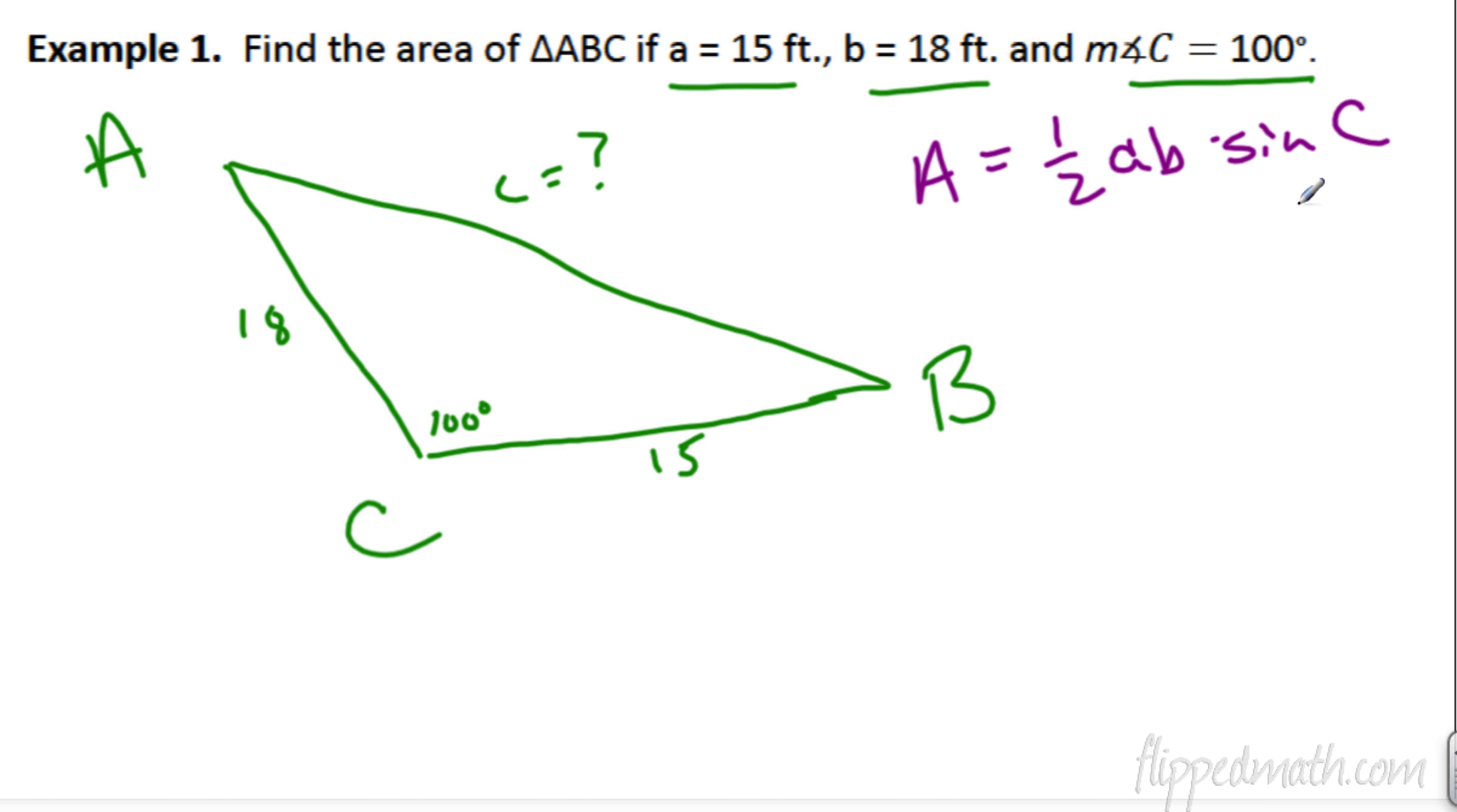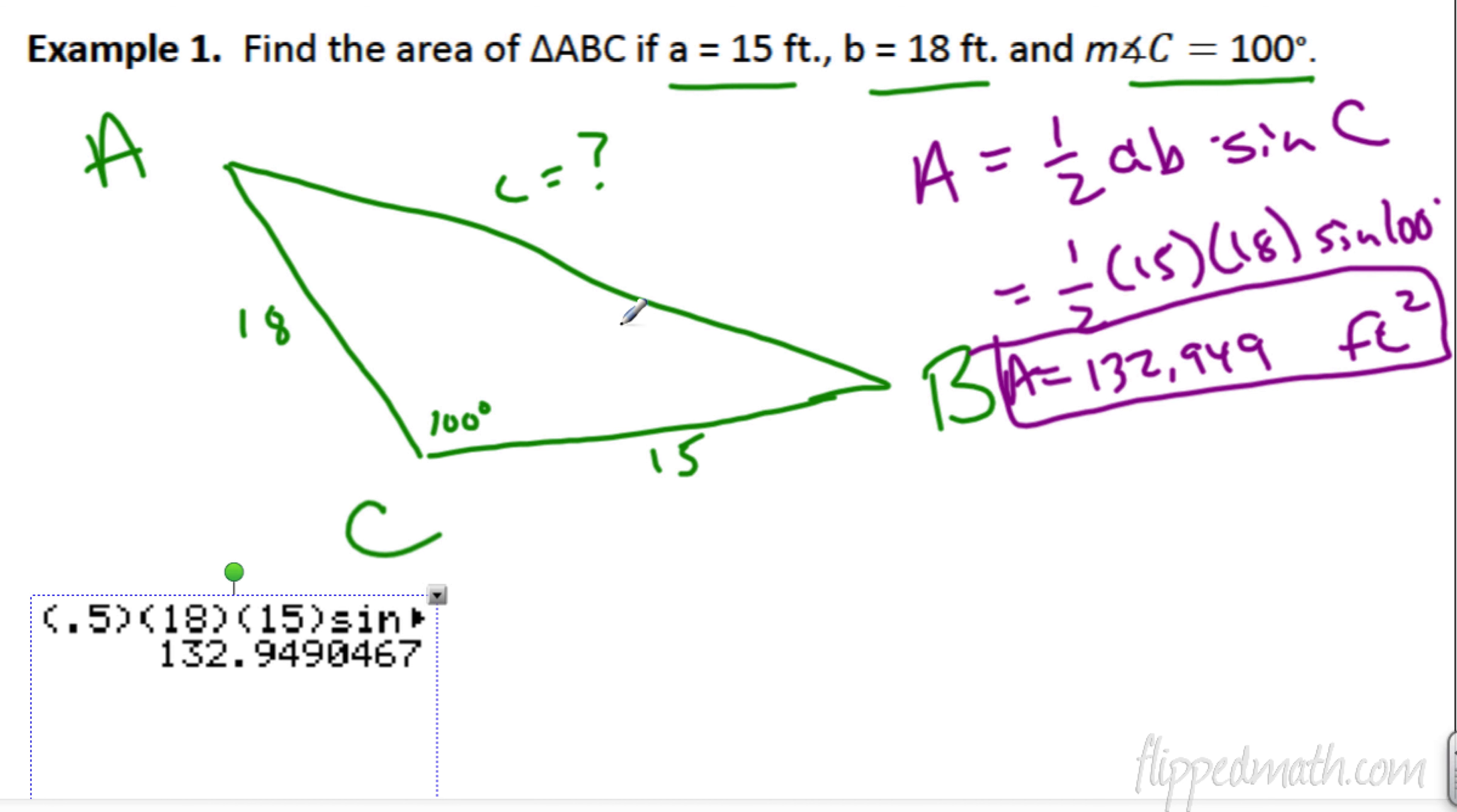Now, what I always do is I figure out, what angle did they give us? They gave us C, so I need the other two legs here in front. That makes it easier. So, one half A, we know A is 15. B, we know B is 18. And, do we know the sine of 100? I bet it's ugly, but that's okay. So, we figure that all out. We're going to get the area equal to 132.949. It does say the units. Square feet. Now, remember, that square goes on, it's a unit. It's a square foot. It's like a little tile. But, that's it. We're done. That's how you find the area of this triangle. How easy is that? Simple.